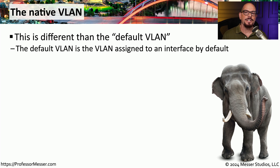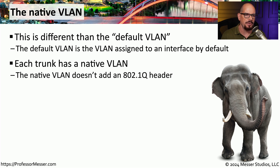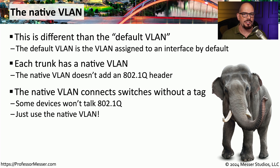When you first configure a switch, there will be a default VLAN — very commonly VLAN 1 — and every device you connect to that switch will be on that VLAN by default. There's also a concept known as a native VLAN. A native VLAN can traverse a trunk, but a VLAN tag is not added to any of its traffic going over that trunk connection. Some devices will not communicate over an 802.1Q network, and some administrative functions within your switches — such as management traffic or switch notification messages — may use the native VLAN rather than being tagged as a separate VLAN.